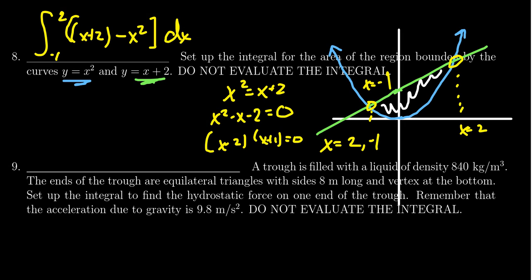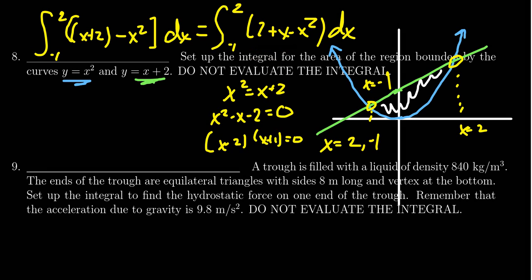Now I do ask you to simplify this. I mean, really, I would accept this as correct. But if we were to simplify it, combine some like terms, you're going to end up with 2 plus x minus x squared, dx.